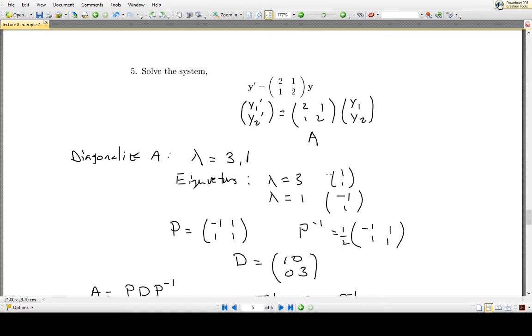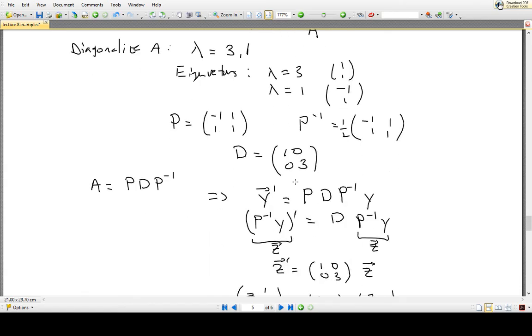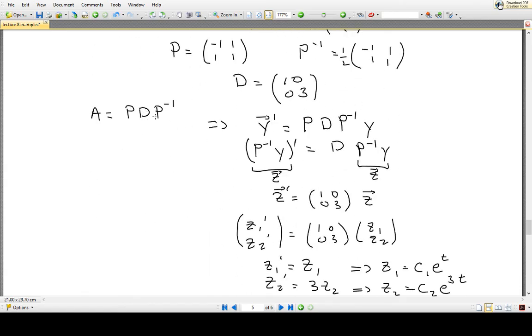So just to summarize, because this matrix A was diagonalizable, we rewrote A as P times some diagonal matrix P inverse.